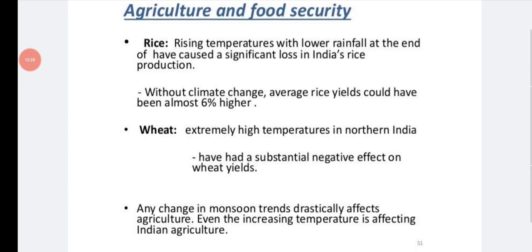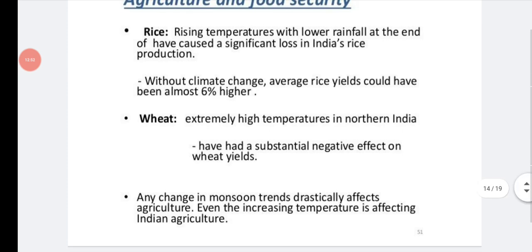Agriculture and food insecurity or food security - rice, due to rising temperature with lower rainfall at the end of growing season caused a significant loss in India's rice production. Without climate change, average rice yield could have been almost 6% higher. If there was no climate change, there would have been 6% higher production of rice, but due to climate change, there is less. And wheat - extended high temperature in Northern India have had a substantial negative effect for wheat yield. Again, there was decreased production of wheat due to high temperature.